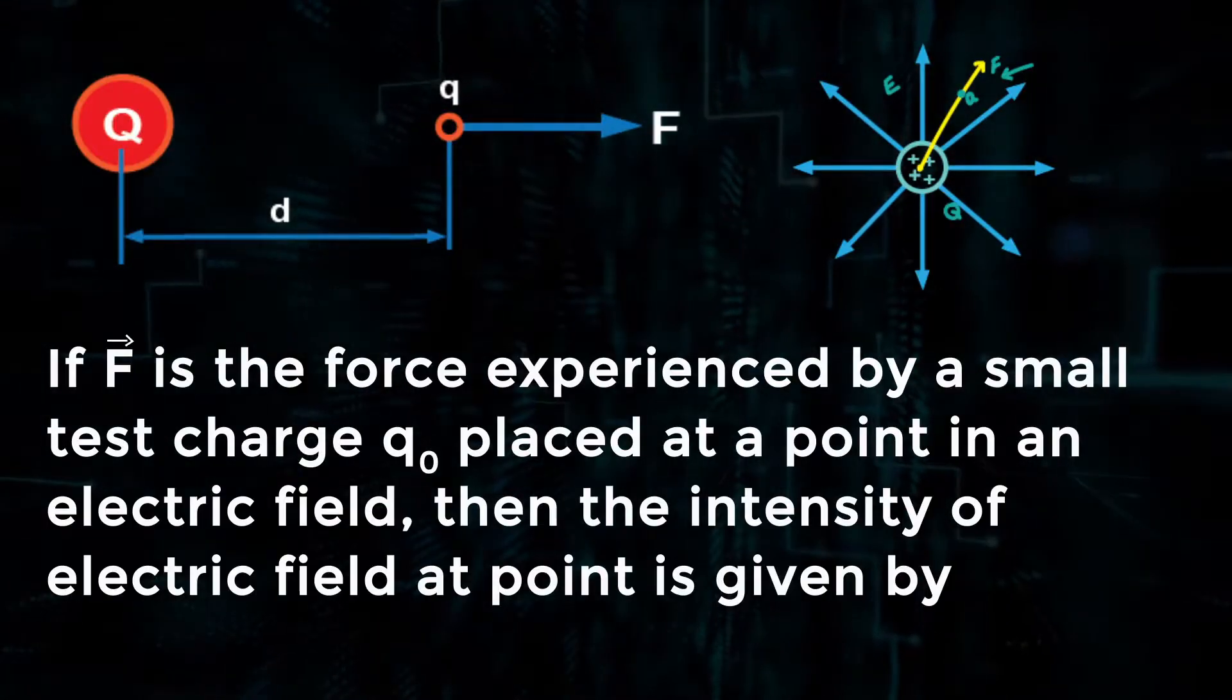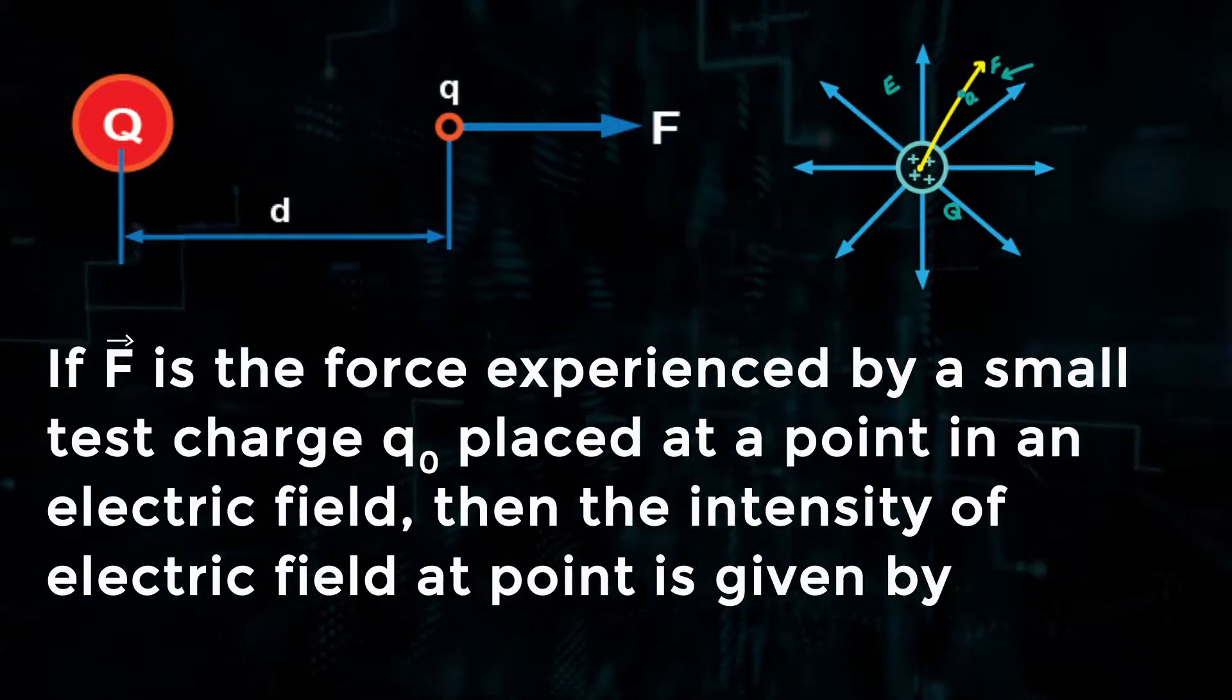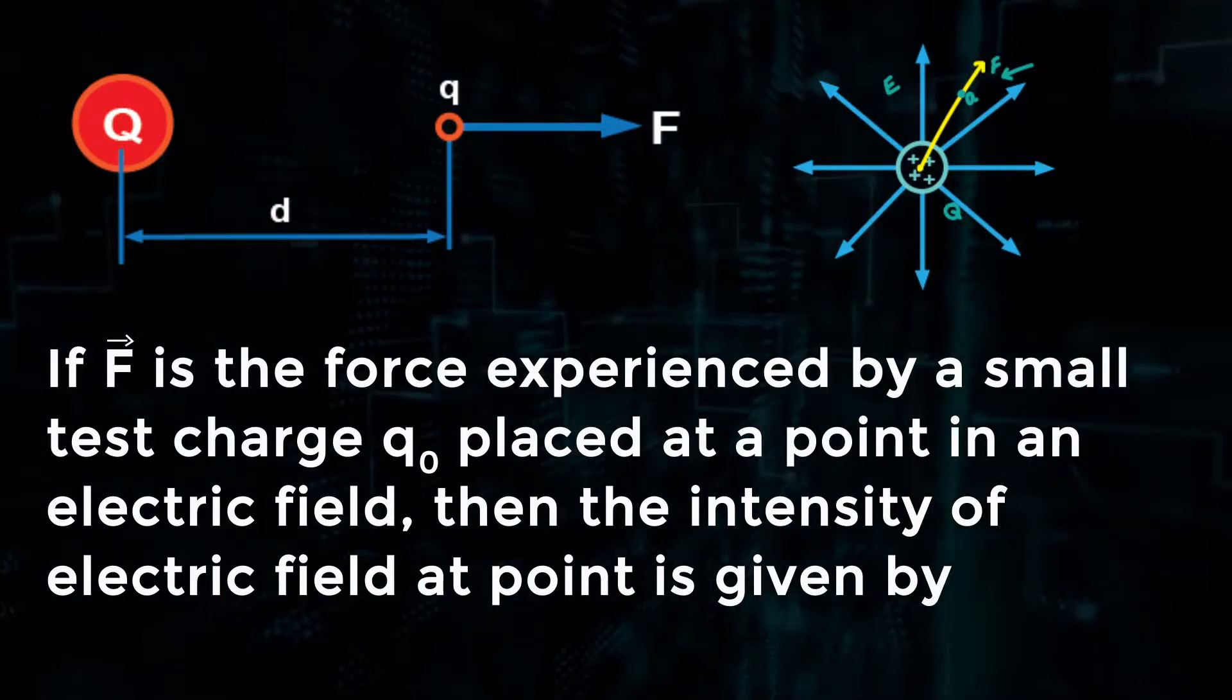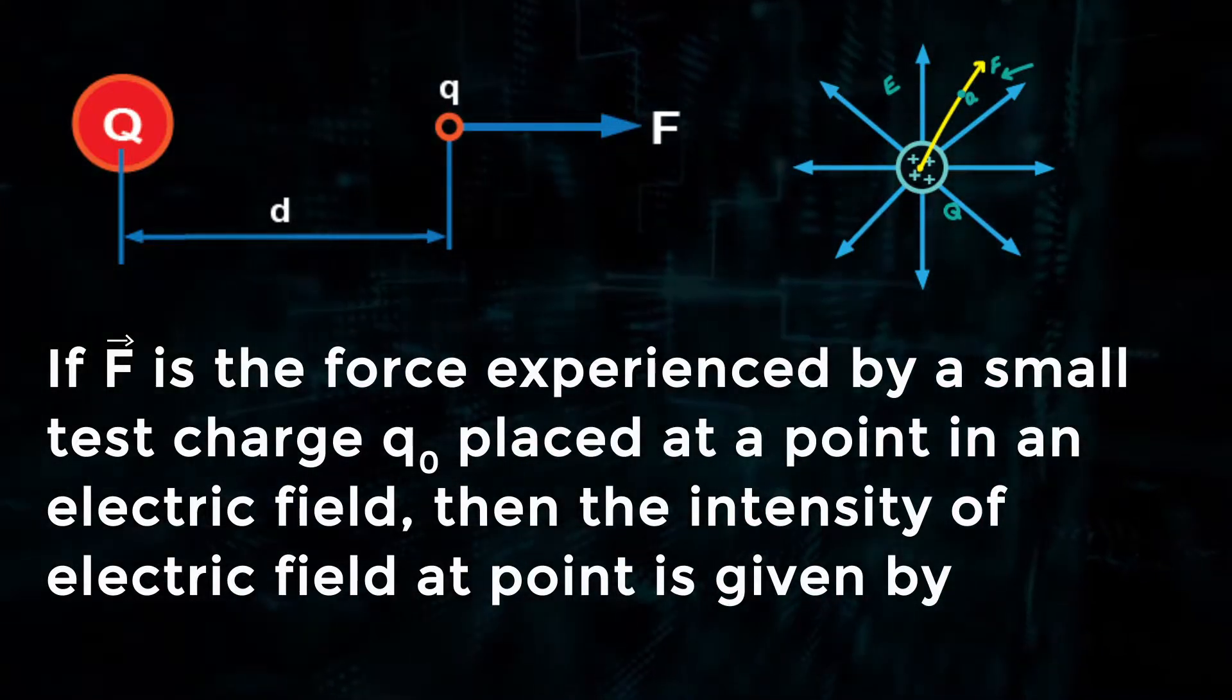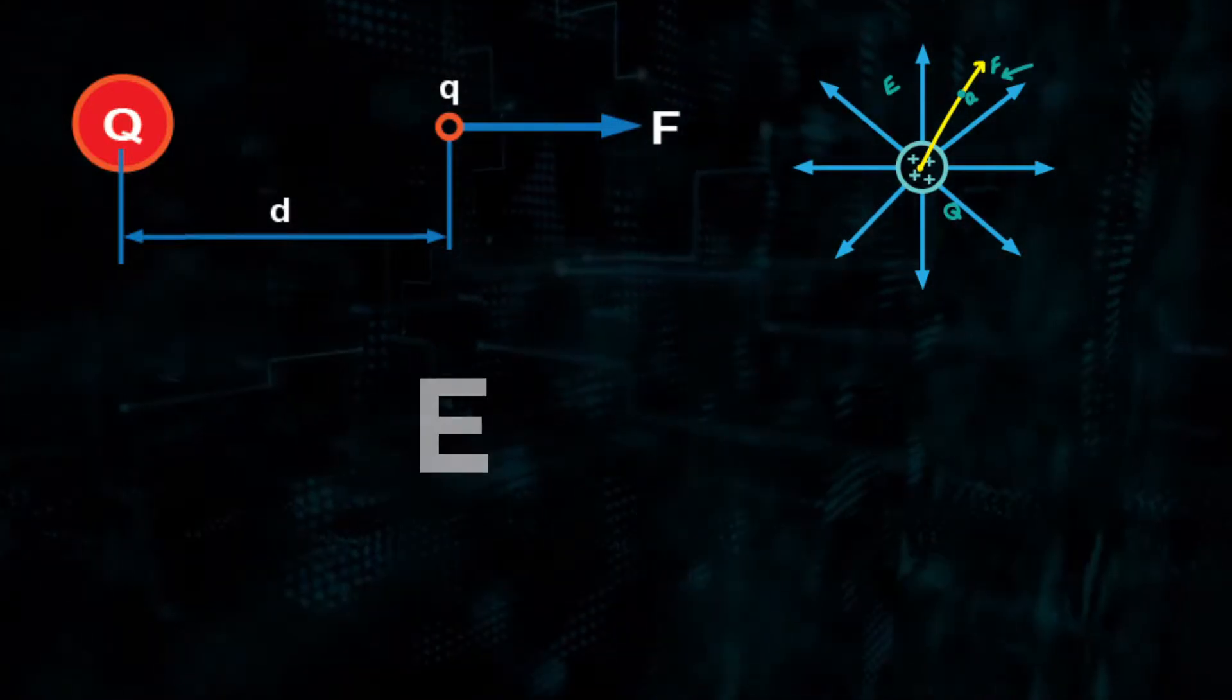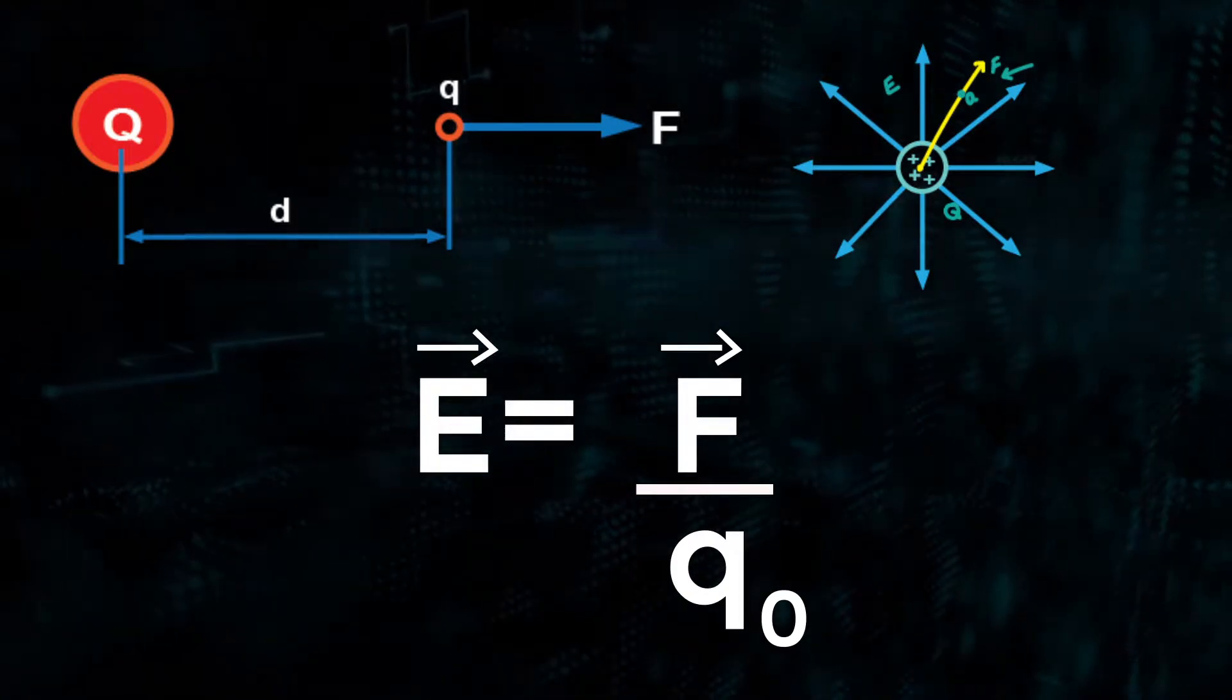If F vector is the force experienced by a small test charge q₀ placed at a point in an electric field, then the intensity of electric field at that point is given by E vector equals F vector divided by q₀.